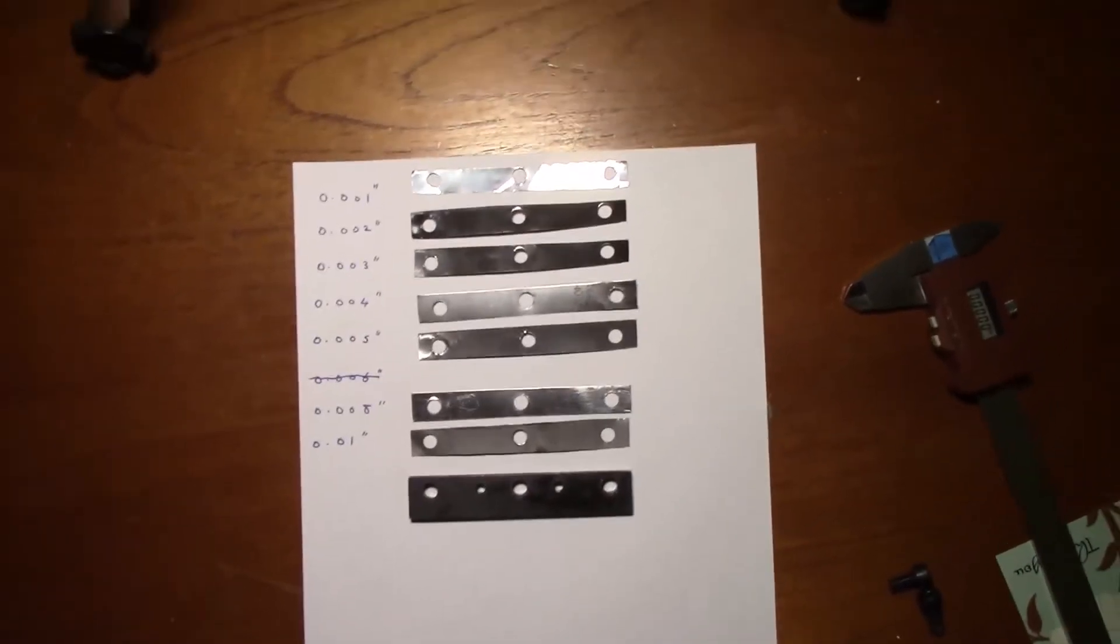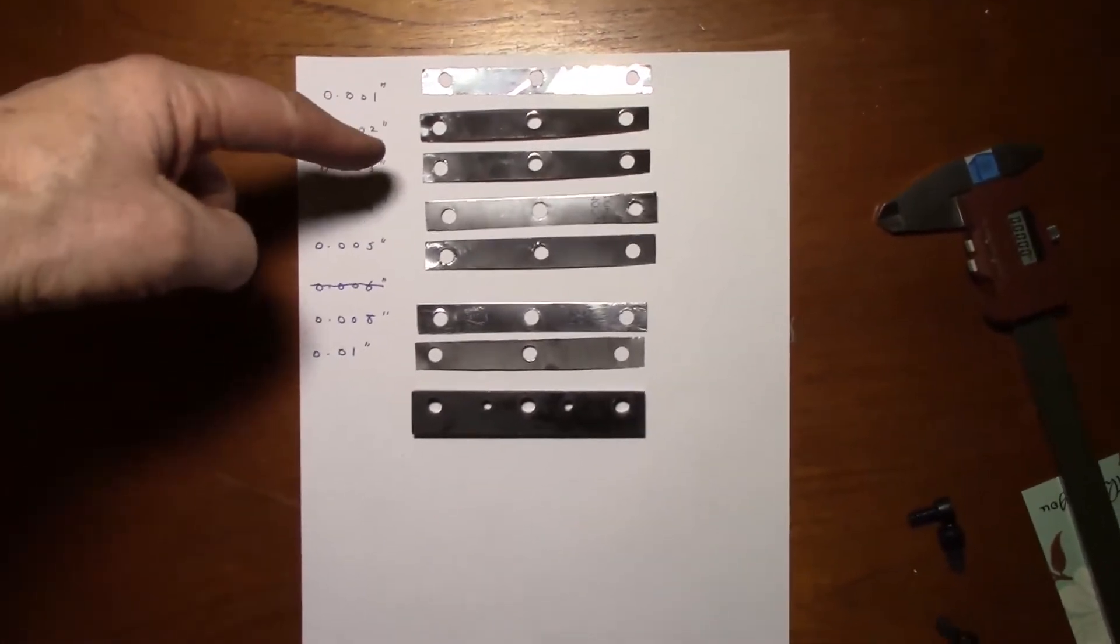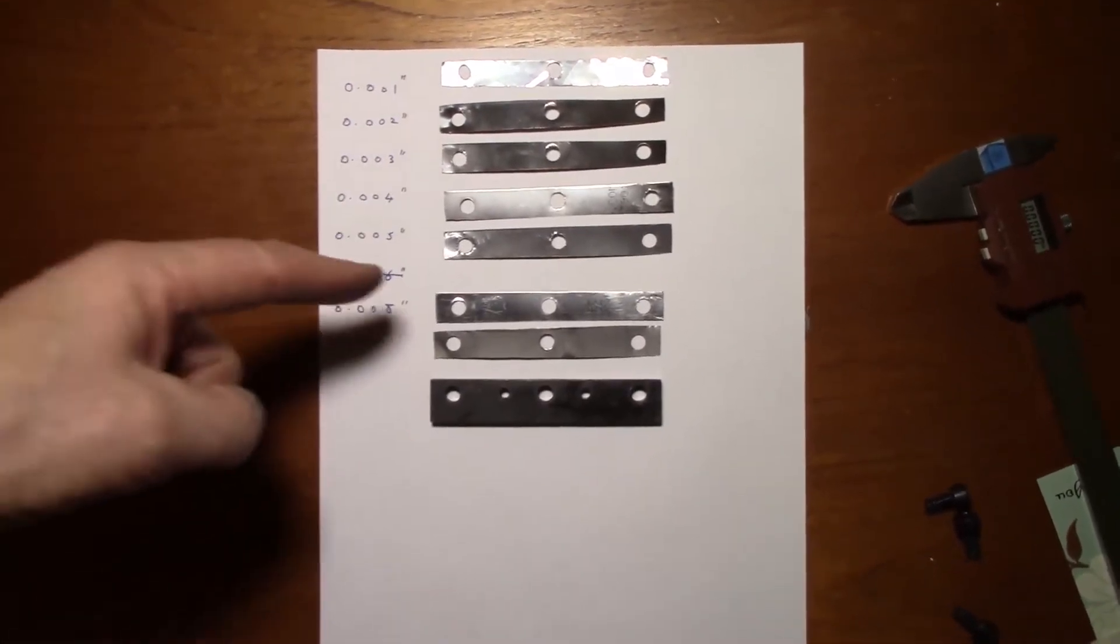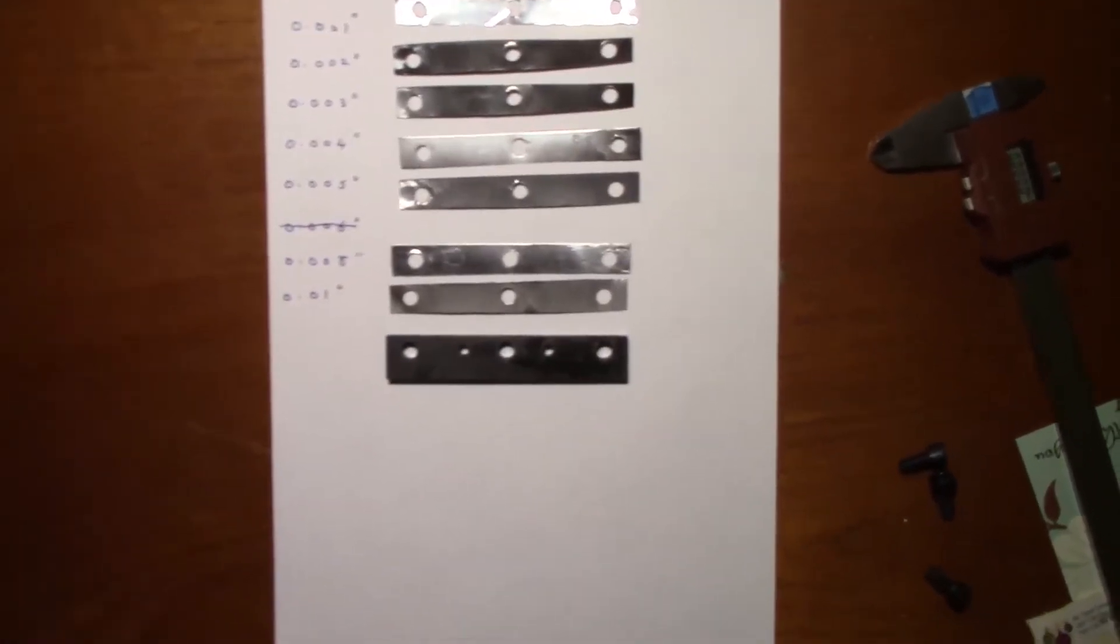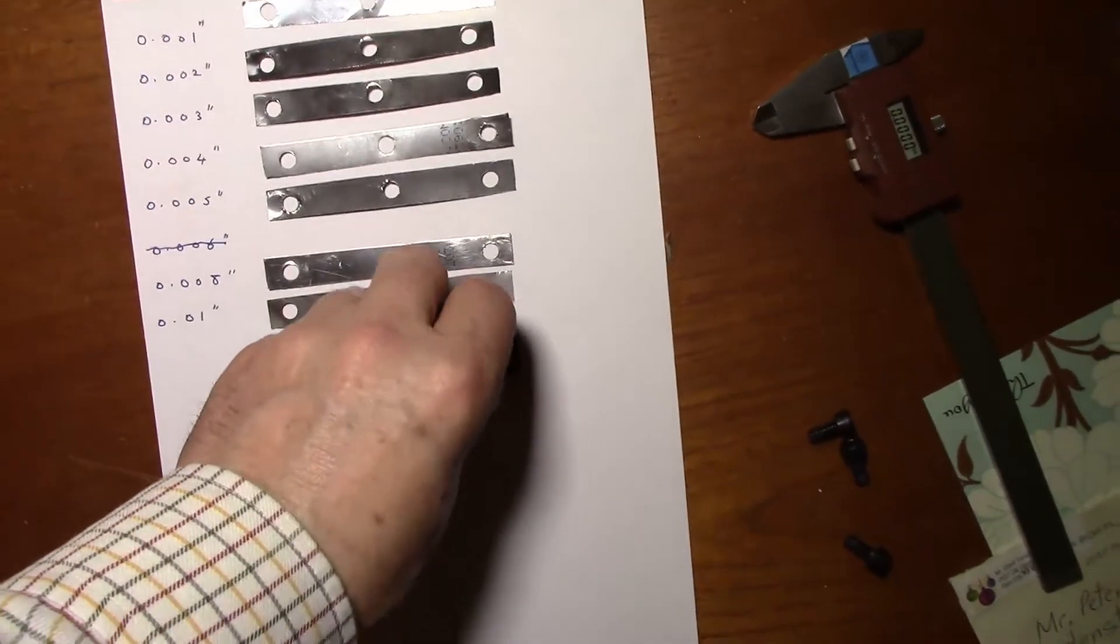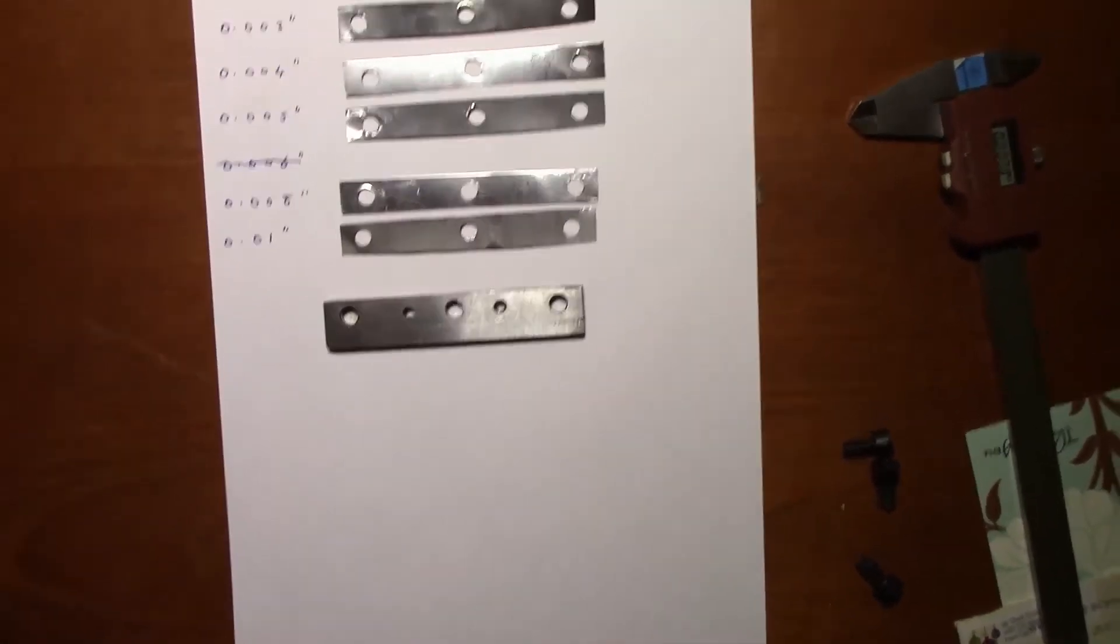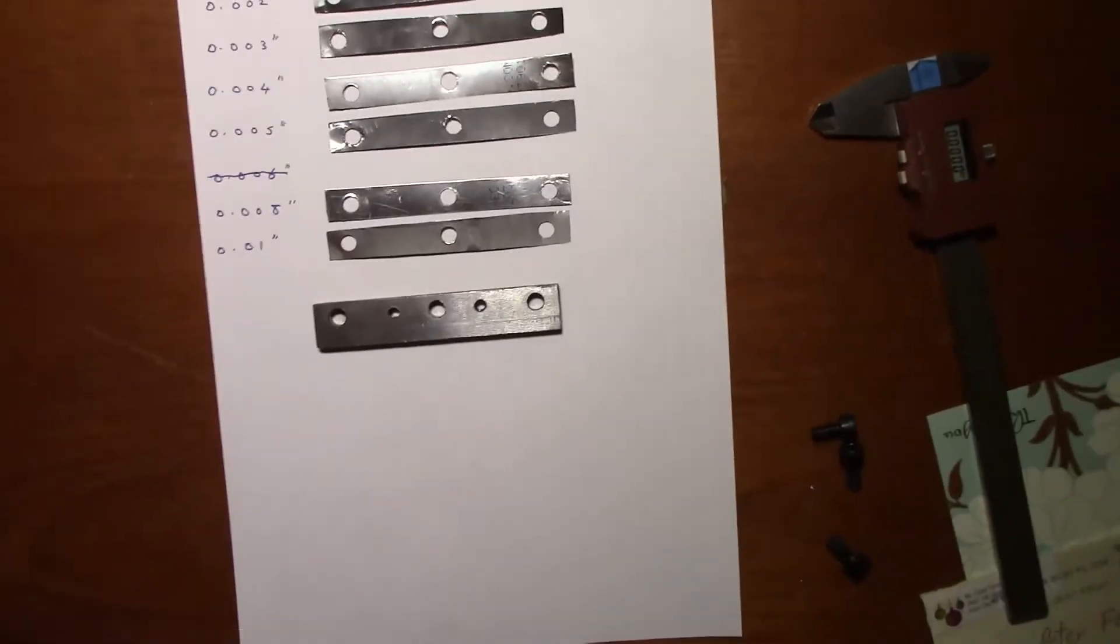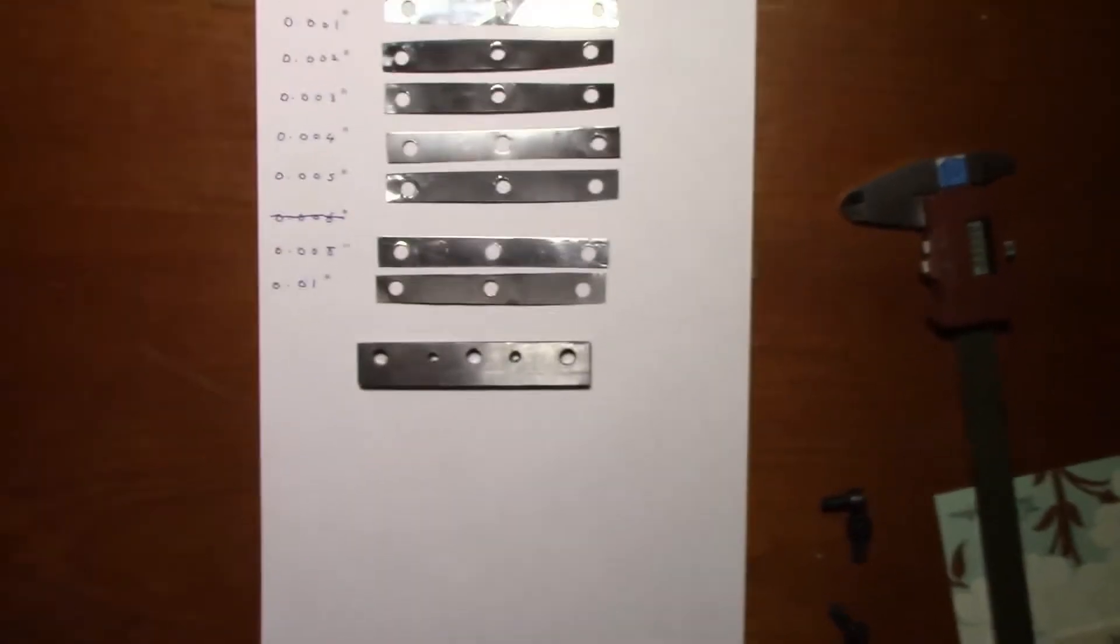Right, well I've ended up with one thou, two thou, three thou, four thou, five thou, eight thou and ten thou bits of shim which will fit on this cast iron plate. So now all I have to do is get the right combination to give me a nice firm saddle.